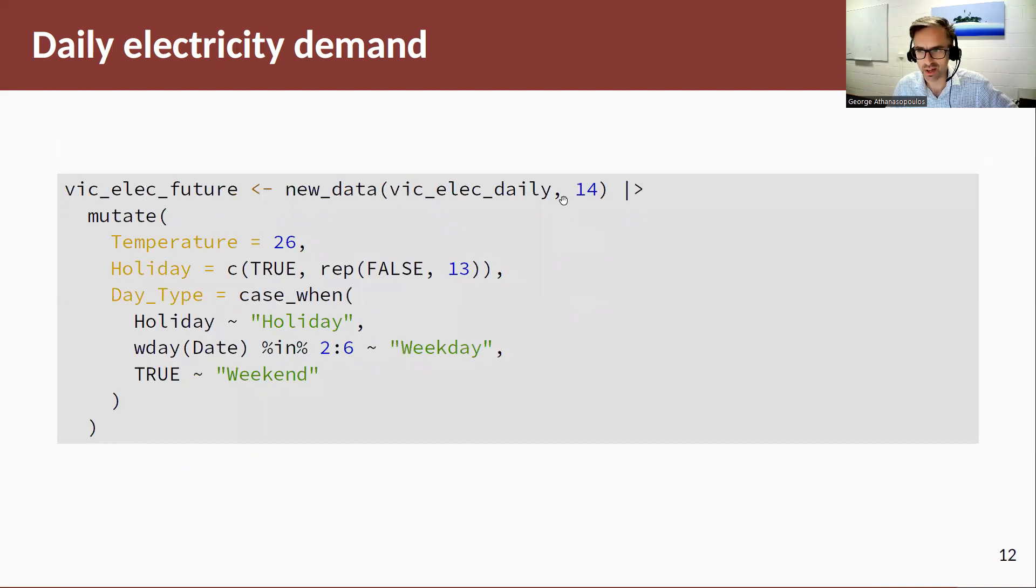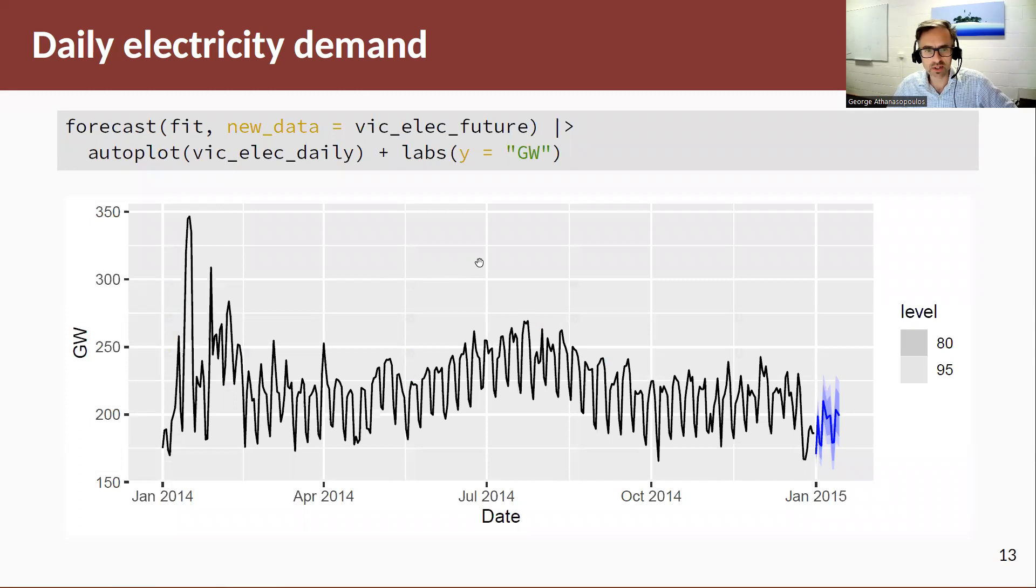Let's go a little bit further in this case. So we're going to forecast 14 days ahead. I'm going to set the temperature for the next 14 days to 26 degrees. And this code here tells it whether I'll have a holiday or a weekday or a weekend. Okay. Here's some forecasts using those future values.